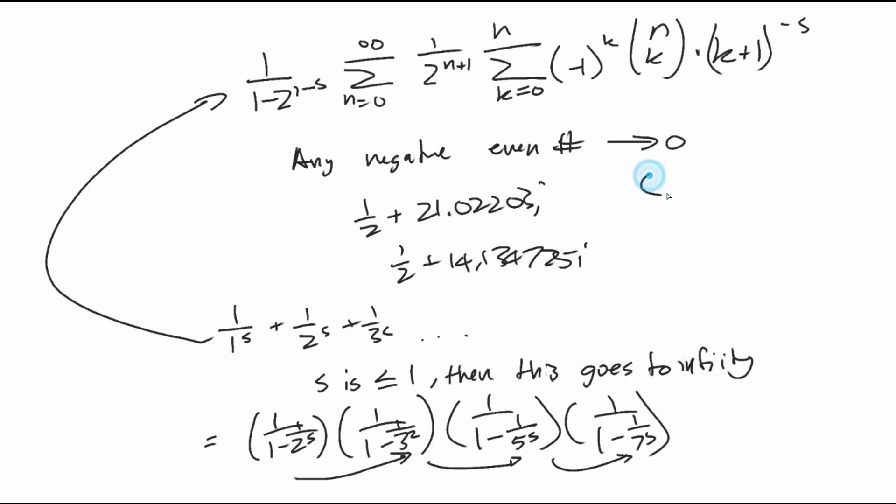And if this is correct, this actually proves Gauss' prime number theorem, which basically states that a good estimate for the number of prime numbers less than x is the integral from 0 to x of dt over ln t, this is a good estimate.